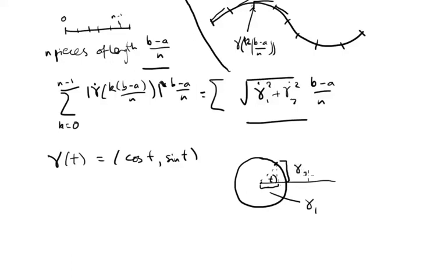This vertical length here, which is gamma 2, this is sine of t. This is how we actually define cos and sine, usually.